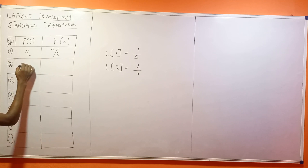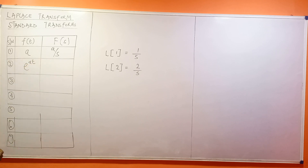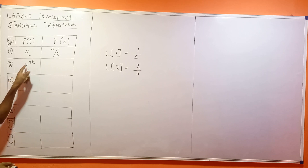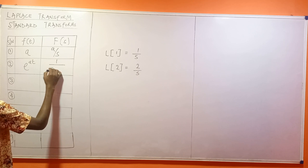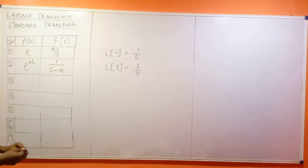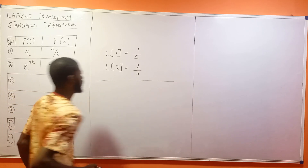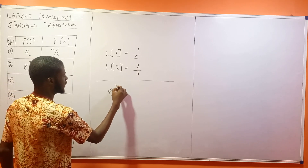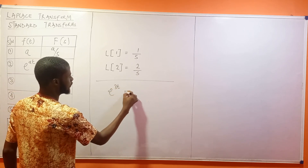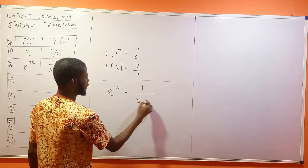The Laplace transform of e^(AT) — when you have e^(AT), your answer is always 1 over S minus A. Please take note: S must be greater than A in terms of the definition of the Laplace transform. So what does this tell you? If you have e^(3T), your answer is going to be 1 over S minus 3.